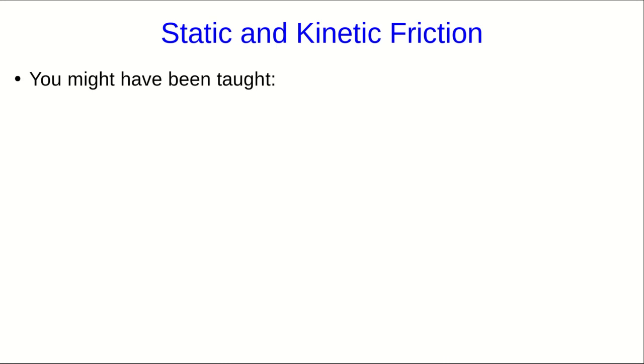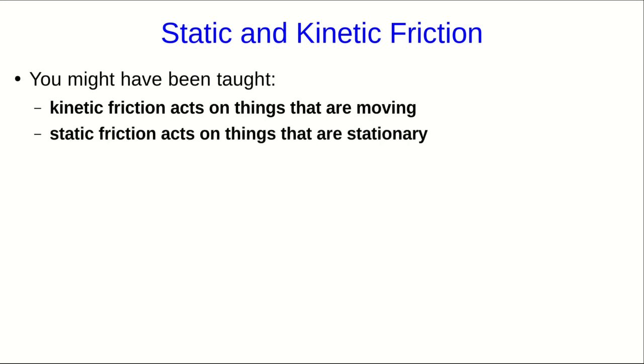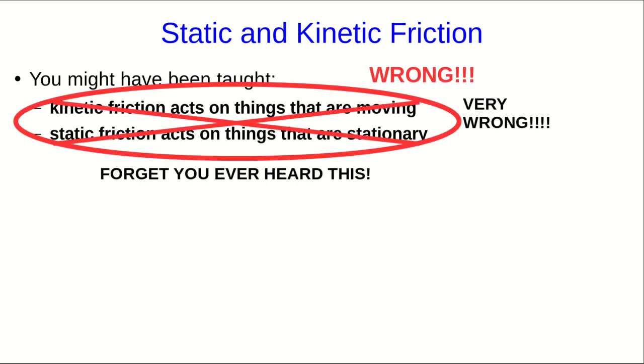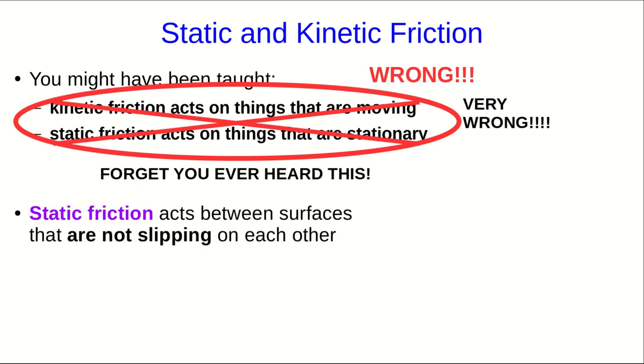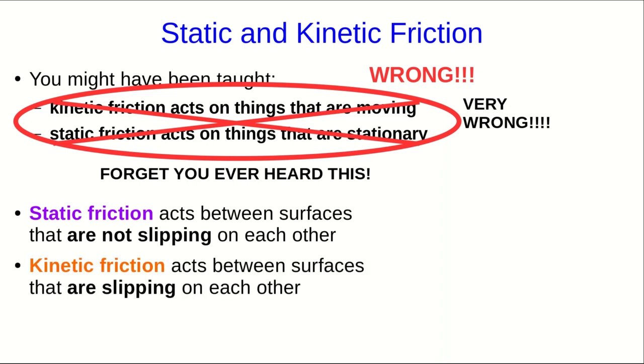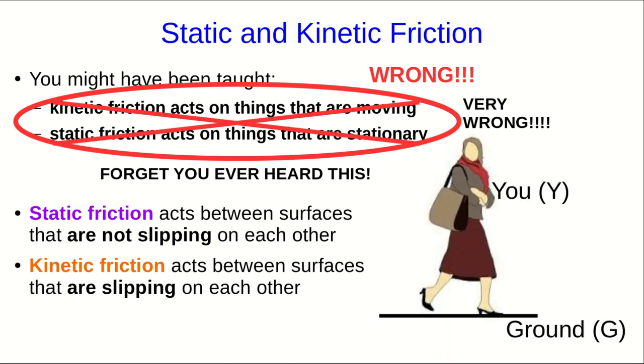Let's look a little bit more at how to decide whether an object has a static or a kinetic friction acting on it. And if you've taken physics before, you might have been taught that kinetic friction acts on things that are moving, and static friction acts on things that are stationary. Unfortunately, that's entirely wrong, and you should forget you ever heard this if it's what you've been taught. Static friction acts between surfaces that are not slipping on each other, and kinetic friction acts between surfaces that are slipping on each other.